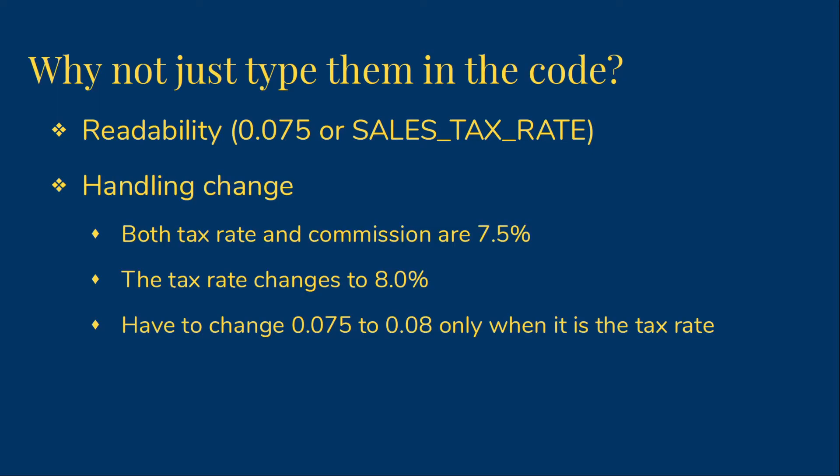The next issue is handling change, because the reality is that change does happen, even for constants. Suppose you have a program where you have to deal with both a tax rate and a commission percentage. They happen to be the same value of 7.5%, so that value appears in various places in your program. Then the tax rate changes to 8%, so now you have to go through and change 0.075 to 0.08, but only in the places where it is the tax rate, not the commission. That will be tedious, and it may take some work to figure out which figures represent which concept.